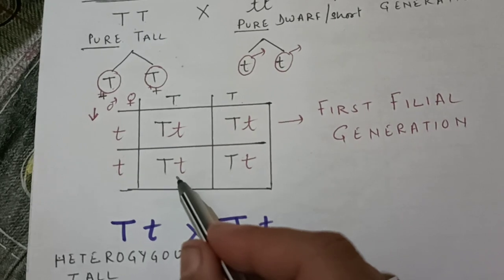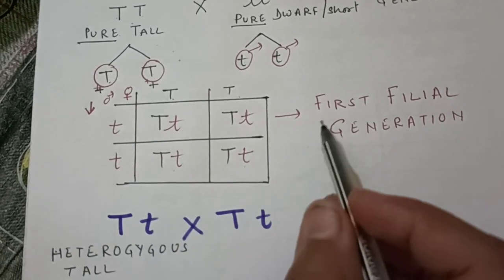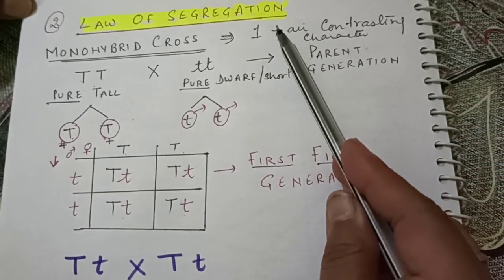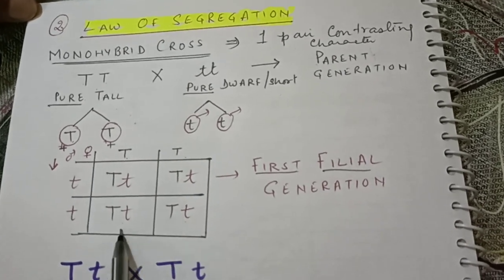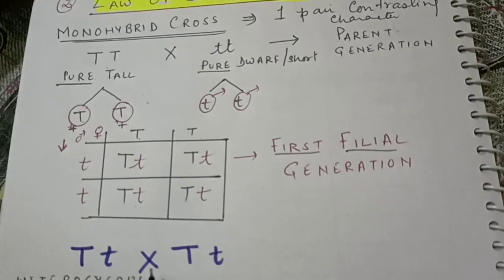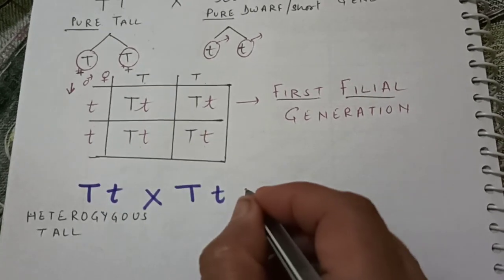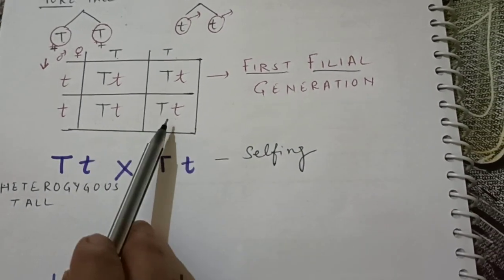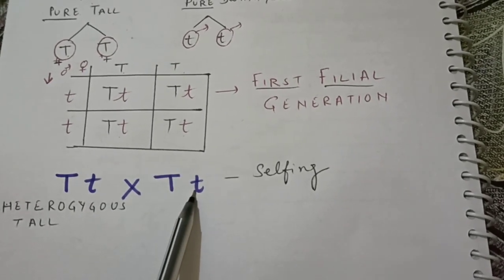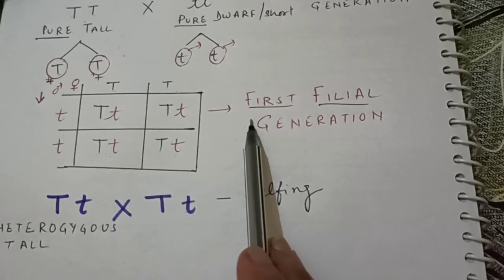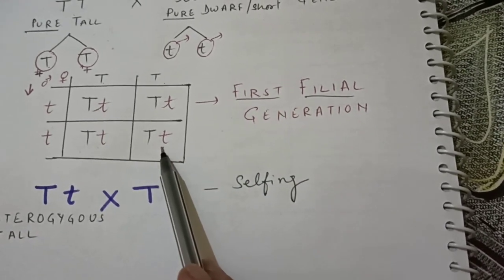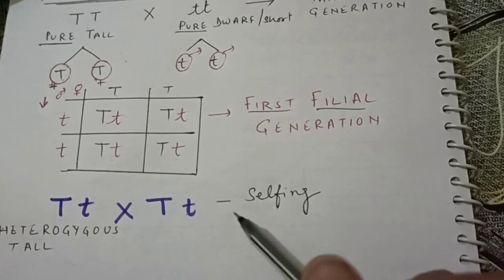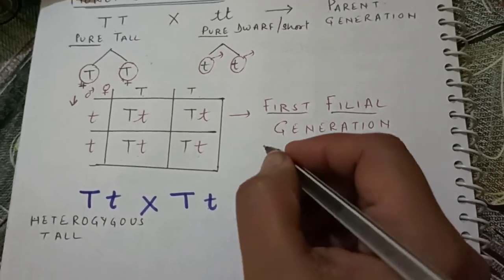Now we are going to take two plants of F1 generation, first filial generation, for explaining the law of segregation. These two plants of F1 generation are crossed and this condition is to be termed as selfing. Selfing means when two plants of same generation are crossed. In one pair contrasting character in F1 generation, one trait was not visible.